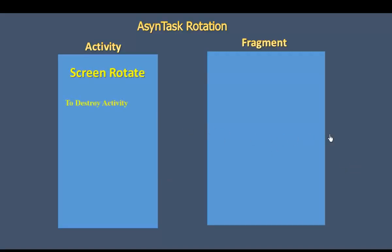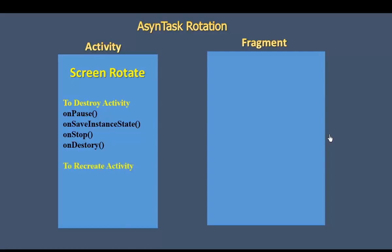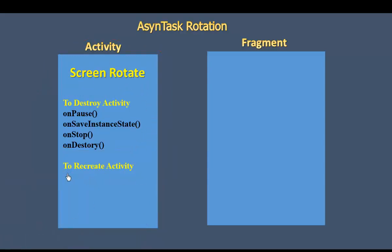The activity's screen rotation: when destroy method is called, it goes through onPause, onSaveInstanceState, onStop, onDestroy. Also, the destroy method means that the activity is recreated going through the lifecycle. Good. When screen rotation happens, on recreate — the activity is recreated, going through onCreate, onStart, onRestoreInstanceState.